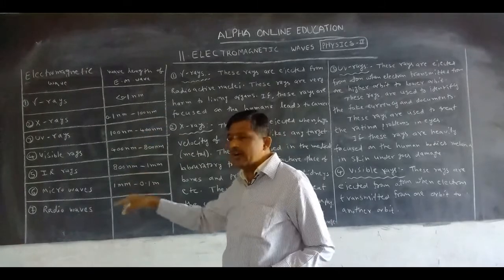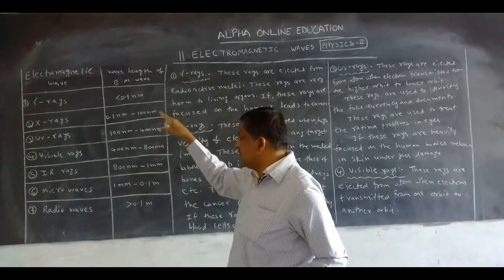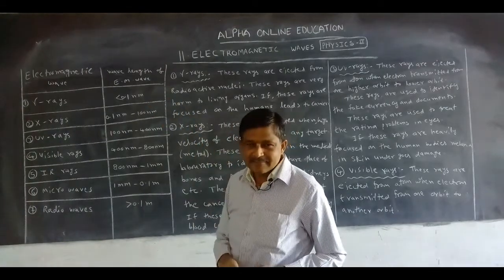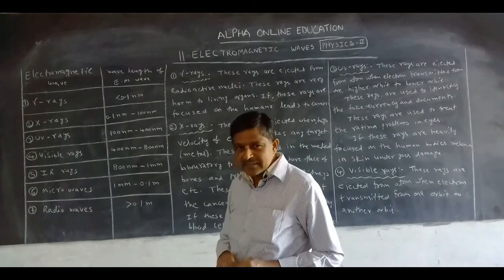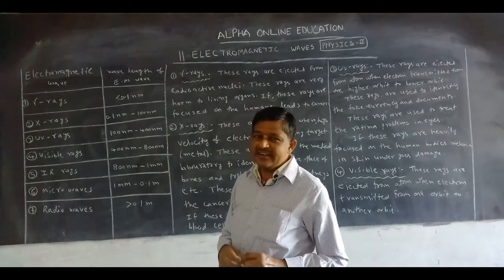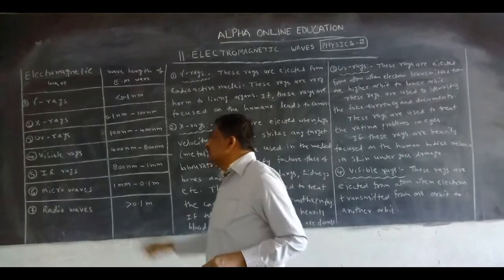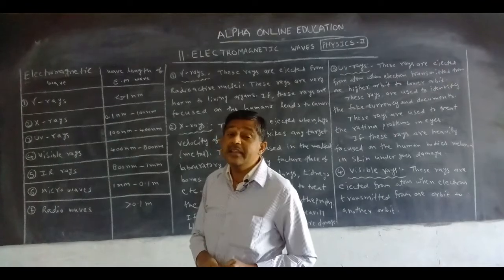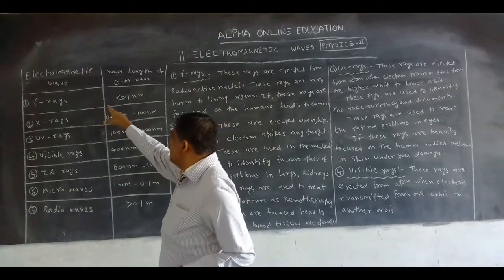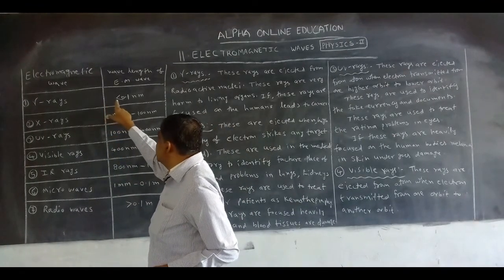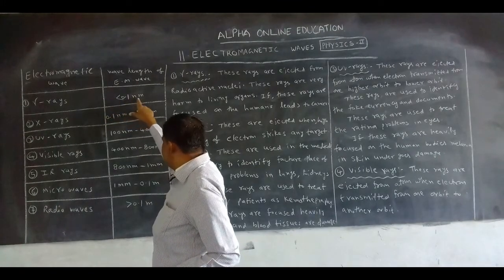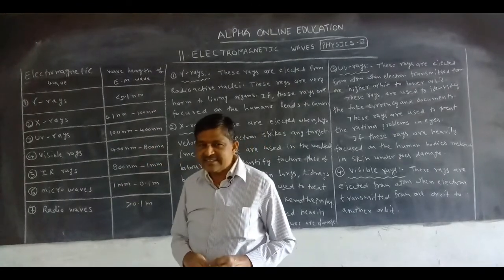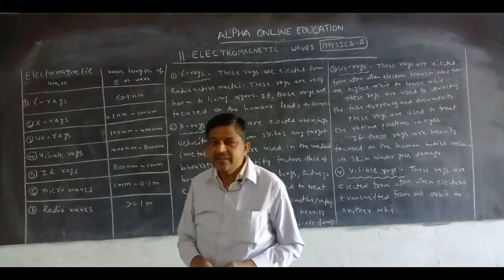Why do we take this order? From gamma rays to radio waves, wavelength increases. Based on the wavelength, these rays are divided into 7 types. First, gamma rays — discovered by Henry Becquerel. The wavelength of gamma rays is less than 0.1 nanometers.